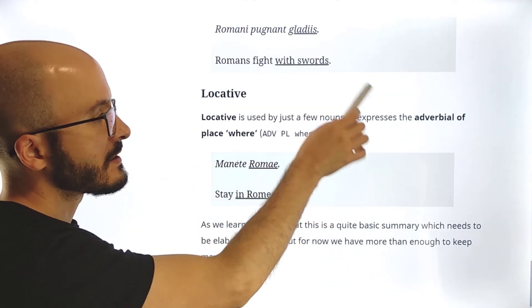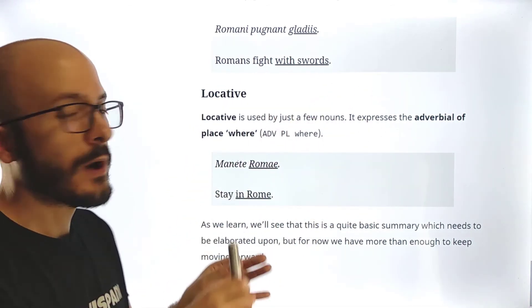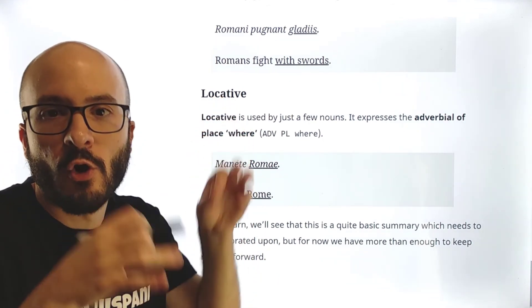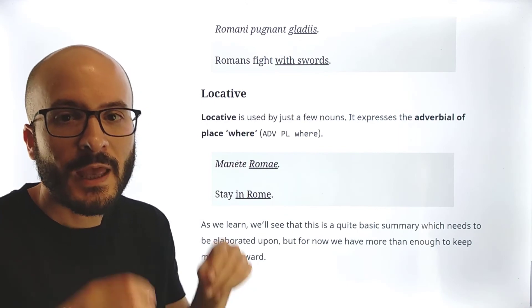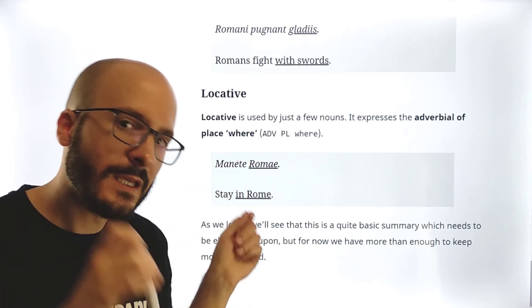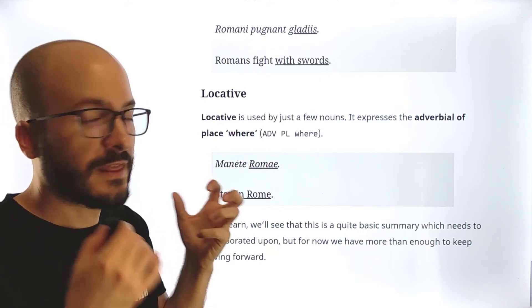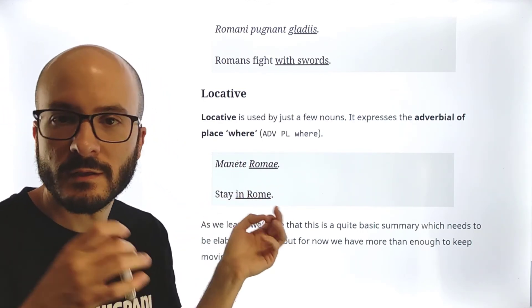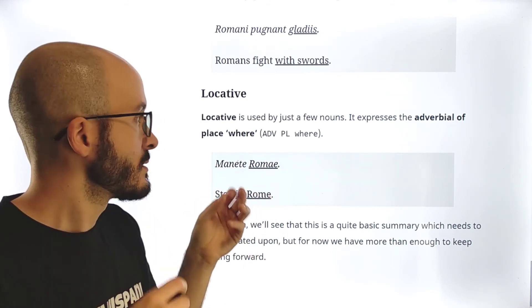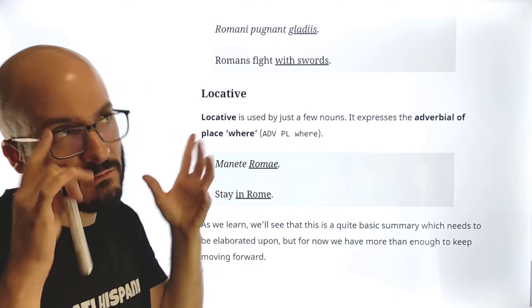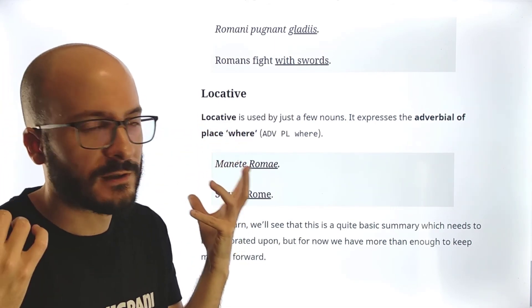It expresses the adverbial of place where, that is, the location. That's why locative, location. Also, for example, I am in Rome. I am in Seville. I am in New York. Then this in Seville, in Madrid, in Rome, in New York, whatever. I would use the locative. Without preposition. This is the most shocking feature of this case.